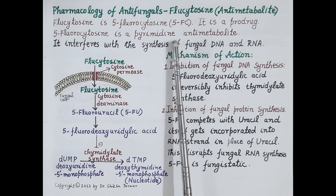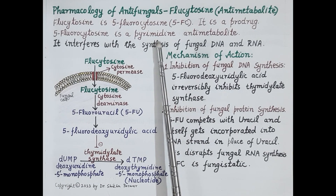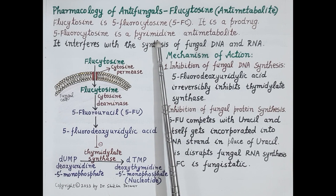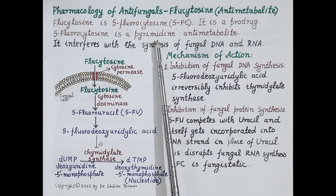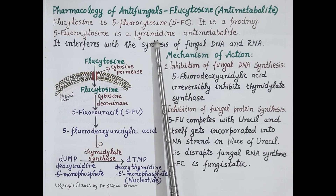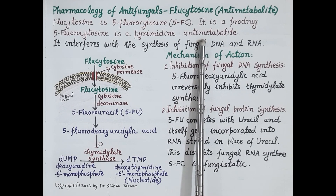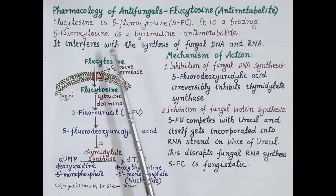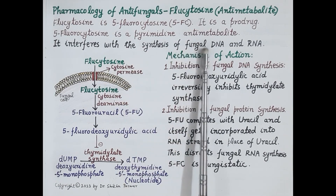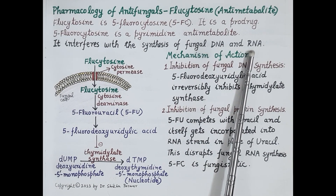Let's first understand what pyrimidines are. Cytosine, uracil, and thymine are pyrimidines that are very essential for the synthesis of DNA and RNA. Flucytosine inhibits the synthesis of thymine nucleotide, and therefore flucytosine is termed a pyrimidine antimetabolite. Further, it interferes with the synthesis of fungal DNA and fungal RNA.